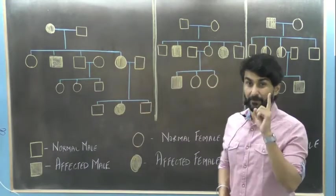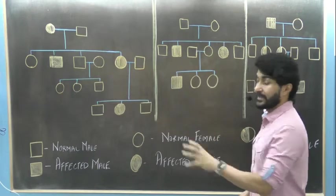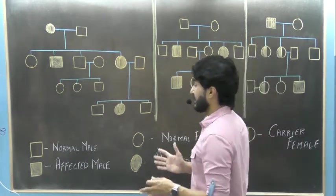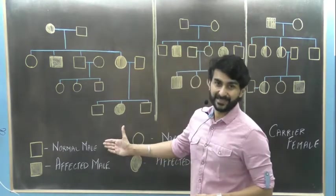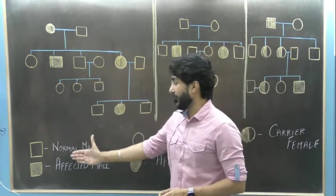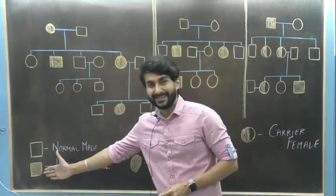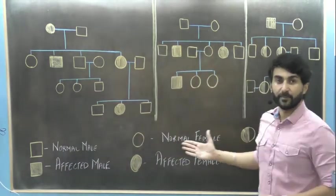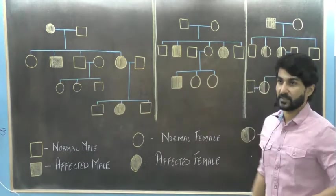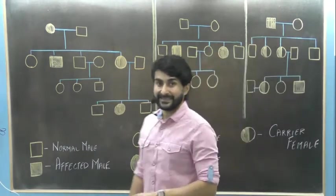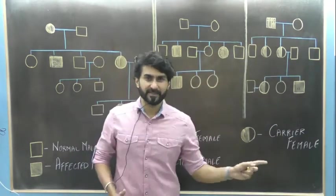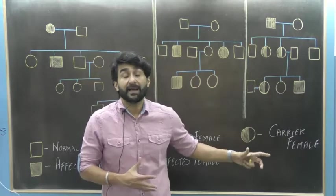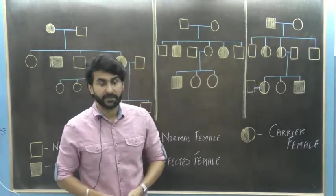First, we'll familiarize with the common symbols used in these charts. This is a symbol for a normal male. If it is shaded, it becomes an affected male. A circle is a symbol of a normal female. If shaded, it becomes an affected female. This symbol — not in your NCERT — is a symbol of a female who is actually a carrier of a particular trait.